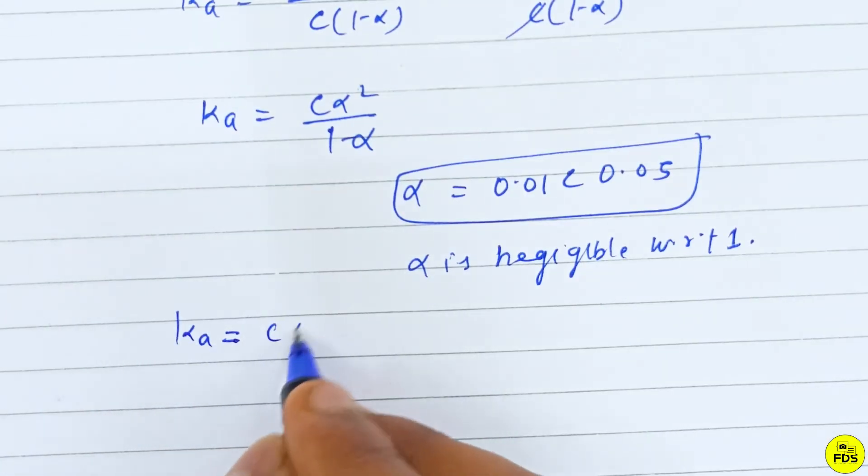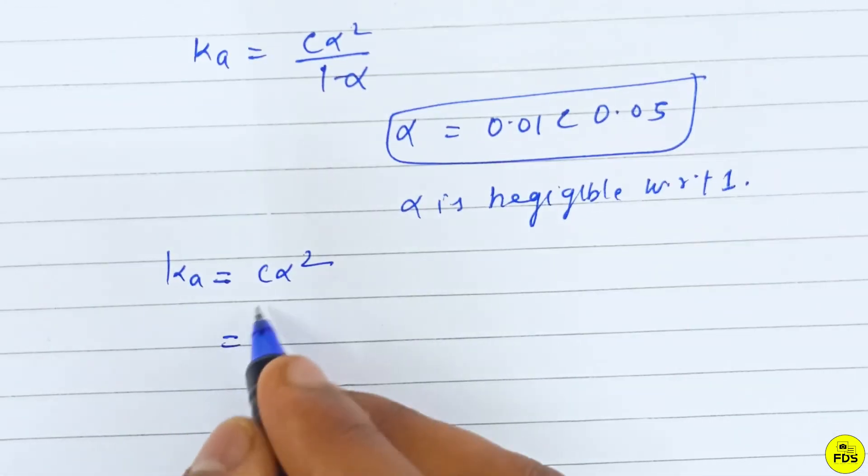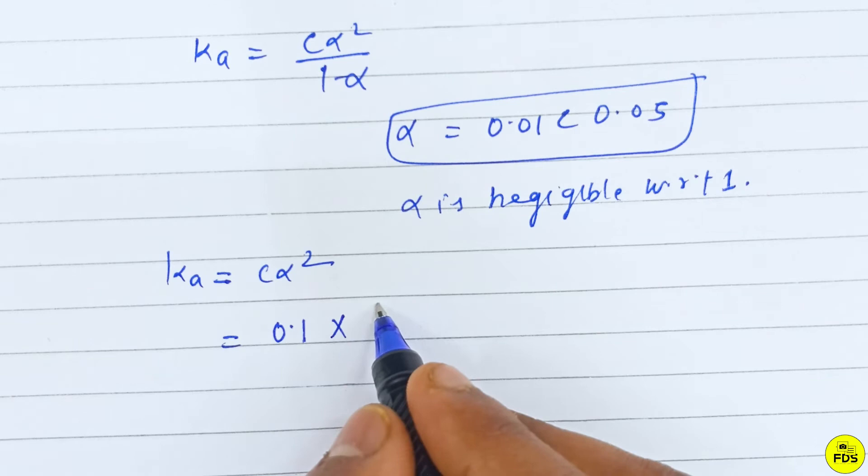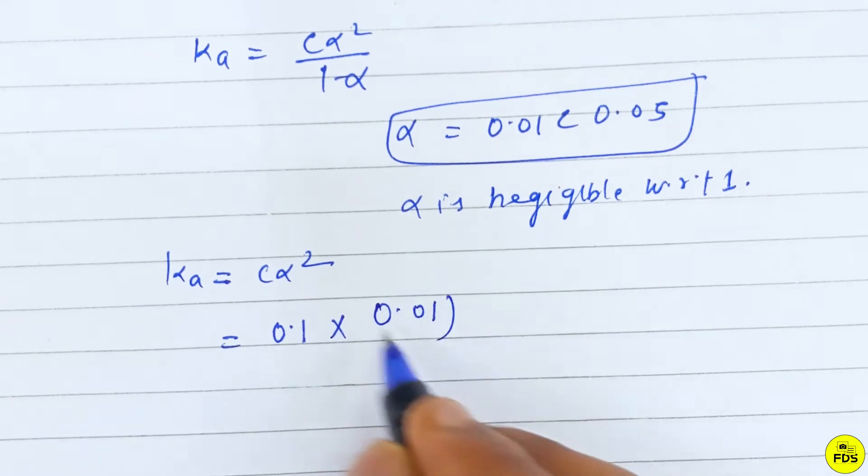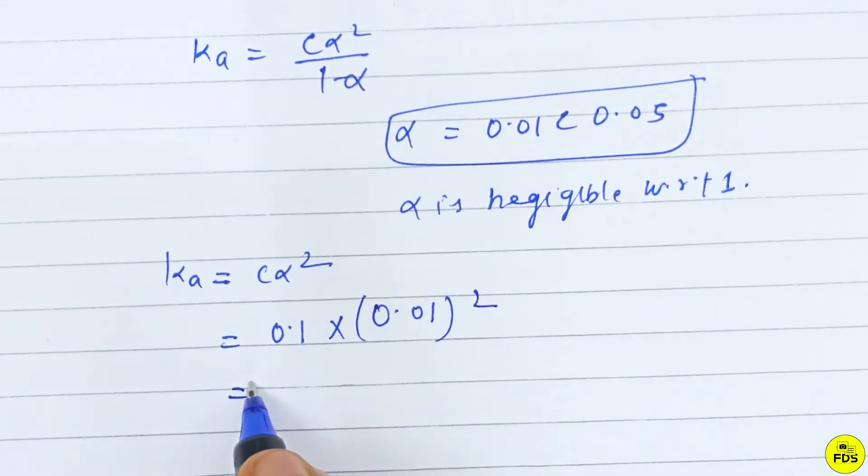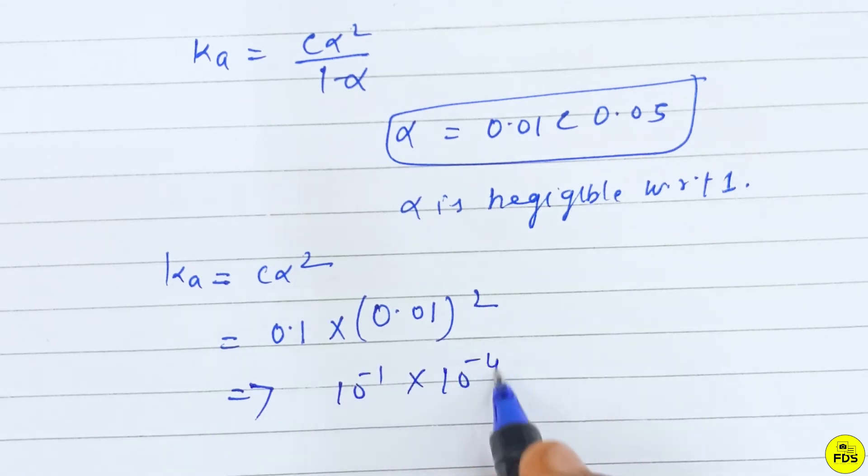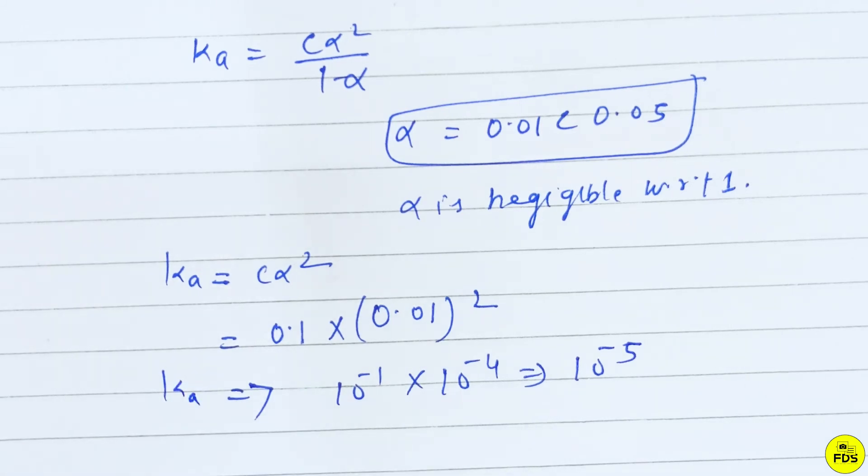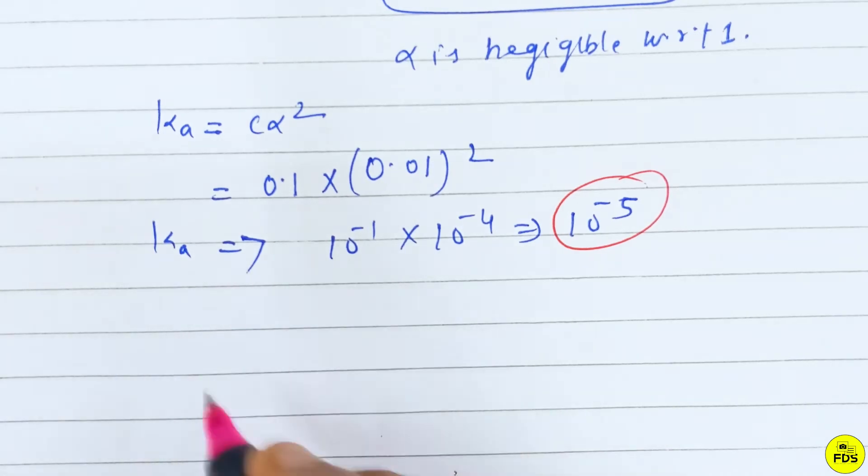Ka equals C alpha squared. C value is 0.1, alpha is 0.01. So 0.1 times (0.01)^2 equals 10^-1 times 10^-4, which gives 10^-5. This is the Ka value: 10^-5.